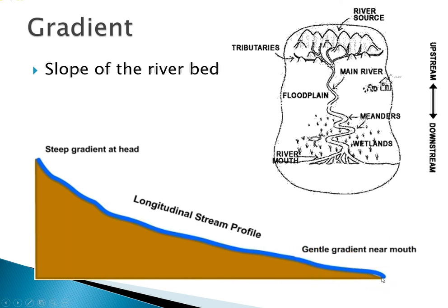The mouth is the end of a stream, and it usually runs into another body of water — a larger stream, a lake, or an ocean. Sometimes streams just sort of disappear, but most of the time a mouth is where it runs into something else. That's where your gentlest slope is, so things tend to move very slowly there. Interestingly, it also tends to have some of the highest discharges, because you usually have a bunch of tributaries feeding in by the time you get to the mouth of the stream — just like the Mississippi River example.